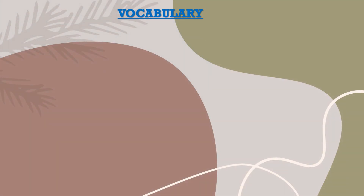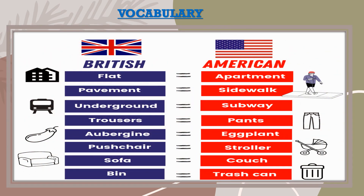Vocabulary. British English vs. American English: Flat / Apartment, Pavement / Sidewalk, Underground / Subway, Trousers / Pants, Aubergine / Eggplant, Push Chair / Stroller, Sofa / Couch, Bin / Trash Can.